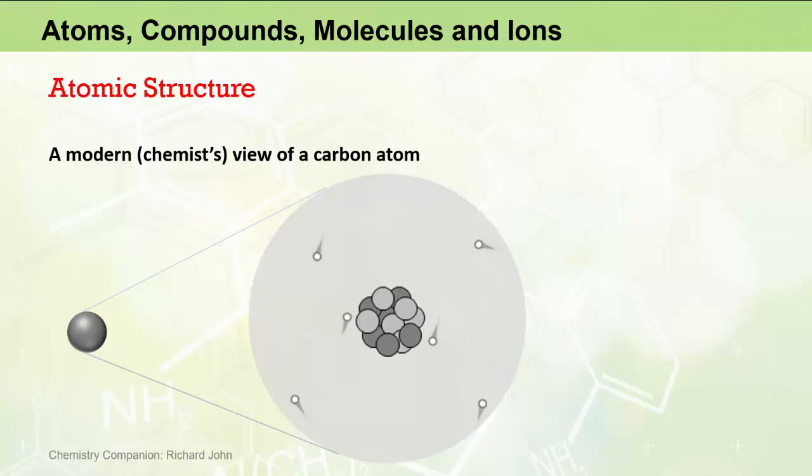Two of these, the proton and the neutron, reside within a dense core of the atom called the nucleus, which contains most of the mass of an atom. Protons carry a net positive electrical charge, while neutrons have no net electrical charge.